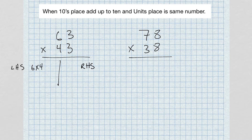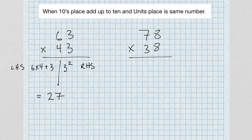So for example, on the left-hand side we're going to have six times four, and then add three. For the right-hand side, we simply square the units digit — three squared. Six times four gives us 24; 24 plus 3 gives us 27. Three squared gives us 9, but on the right-hand side we need two digits, so we write it as 09. Our answer is 2709.